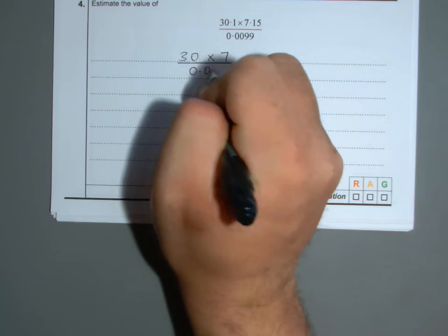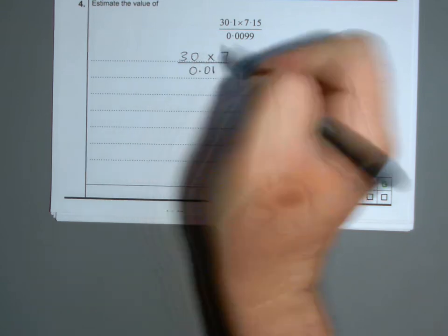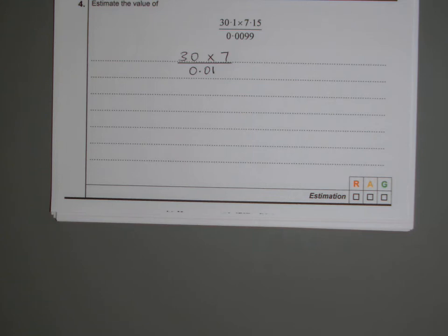You'd get 0.01, and that's what that is to two decimal places or to one significant figure.